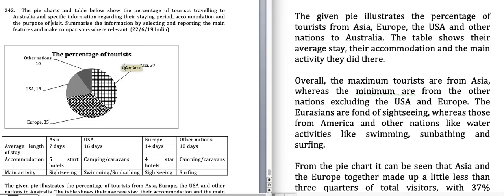In the pie chart, the percentage of tourists is given: Asia 37%, Europe 35%, USA 18%, and other nations 10%. In the table, three things are given: average length of stay, accommodation, and main activity. Average length of stay is given in days, along with the main accommodations and the main activities that tourists do there.